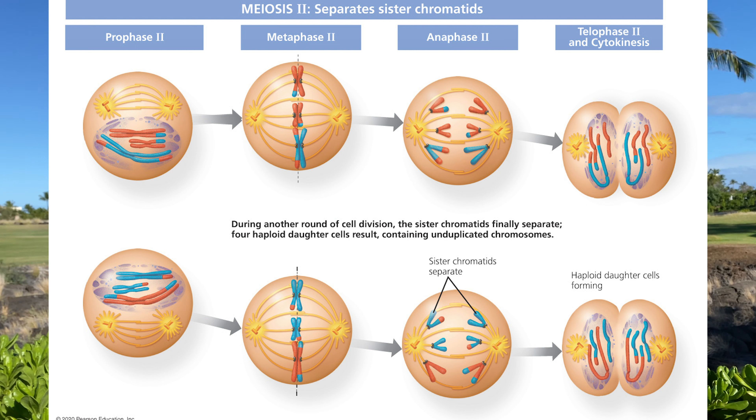The result is four haploid daughter cells that are genetically unique from each other and from the parent cell. Meiosis is all about increasing genetic variation in the offspring. It reduces the number of chromosomes in the parent cell from diploid to haploid, and incorporates even more variation thanks to crossing over.